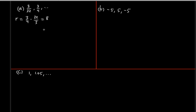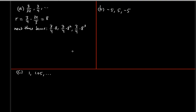The 3s cancel out, so it's going to be 32 over 4, which is 8. So the next three terms should be easy to find. It's going to be 3/32 times 8 for the next term, then 3/4 times 8 to give us the third term, 3/4 times 8² for the fourth term. This gives us 8/4 = 2, so 3 times 2 = 6 for the third term.